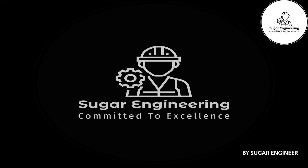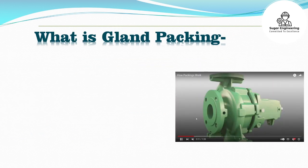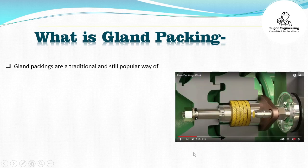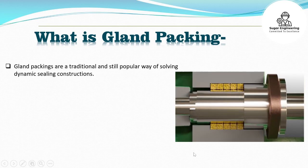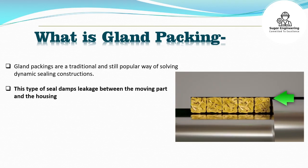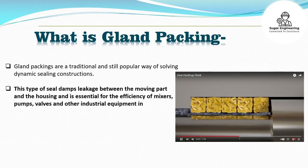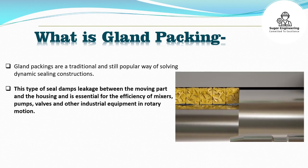Welcome back to our channel Sugar Engineering. Today we will discuss the topic: types of gland packings. Gland packings are a traditional and still popular way of solving dynamic sealing constructions. This type of seal damps leakage between the moving part and the housing and is essential for the efficiency of mixers, pumps, valves and other industrial equipment in rotary motion. Gland packings are of the following types.